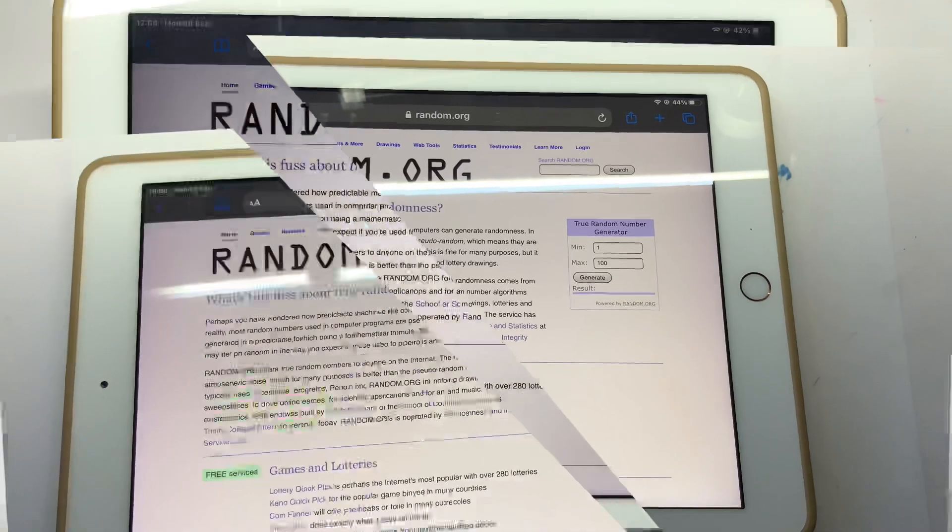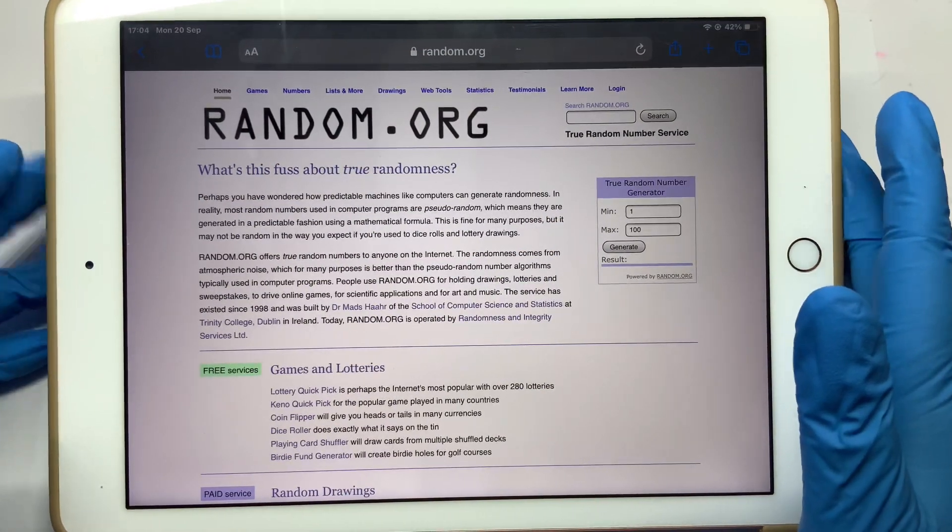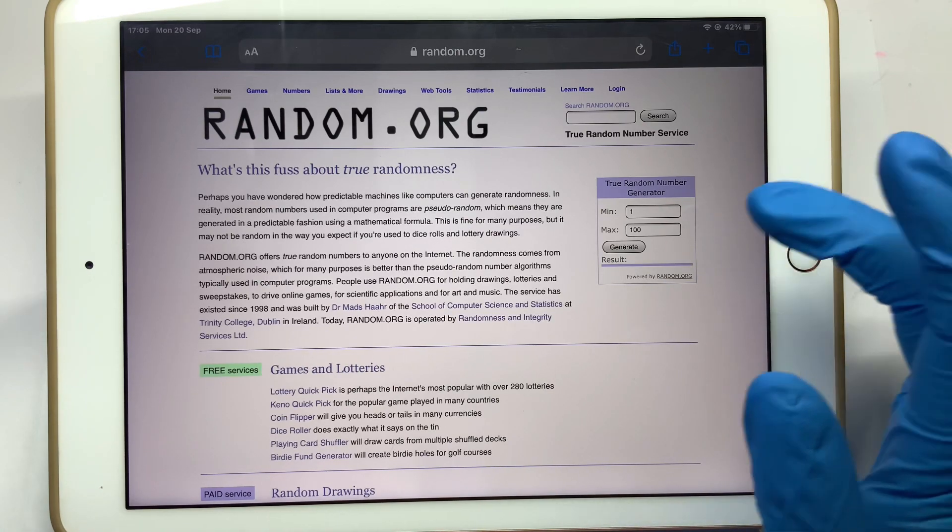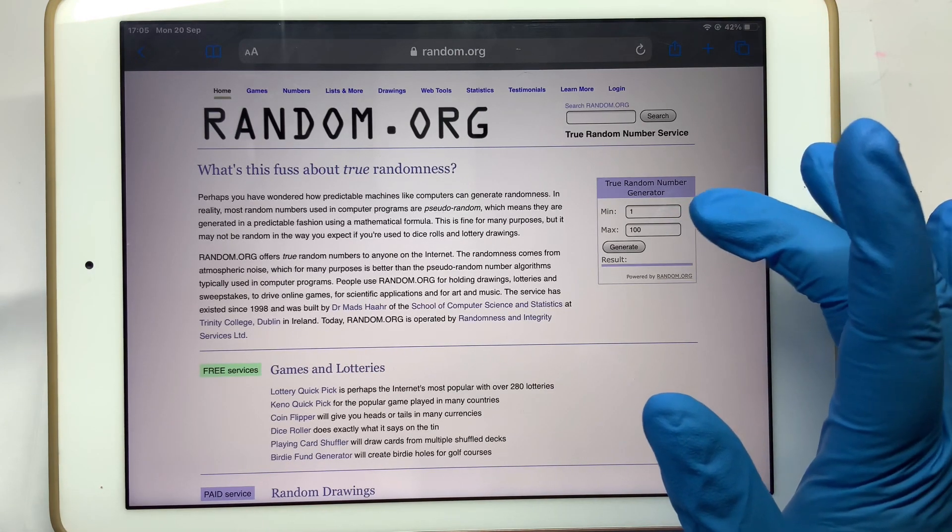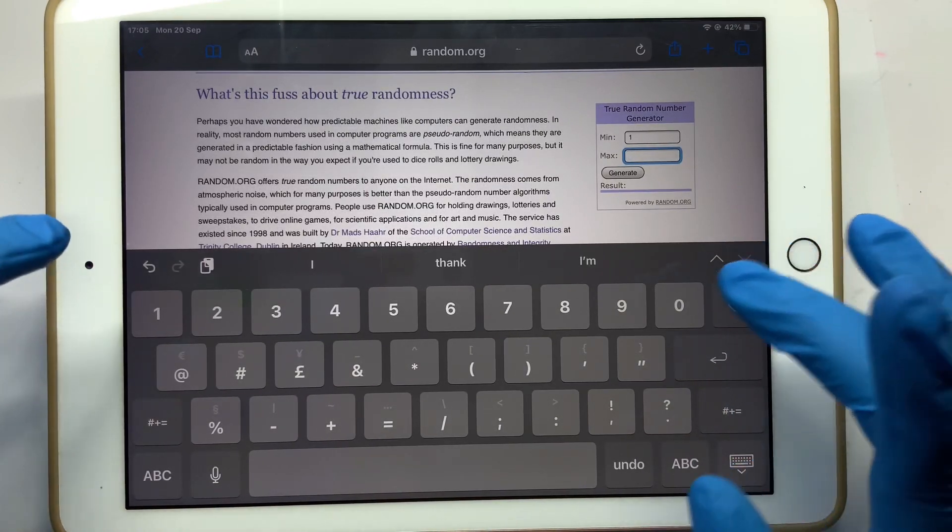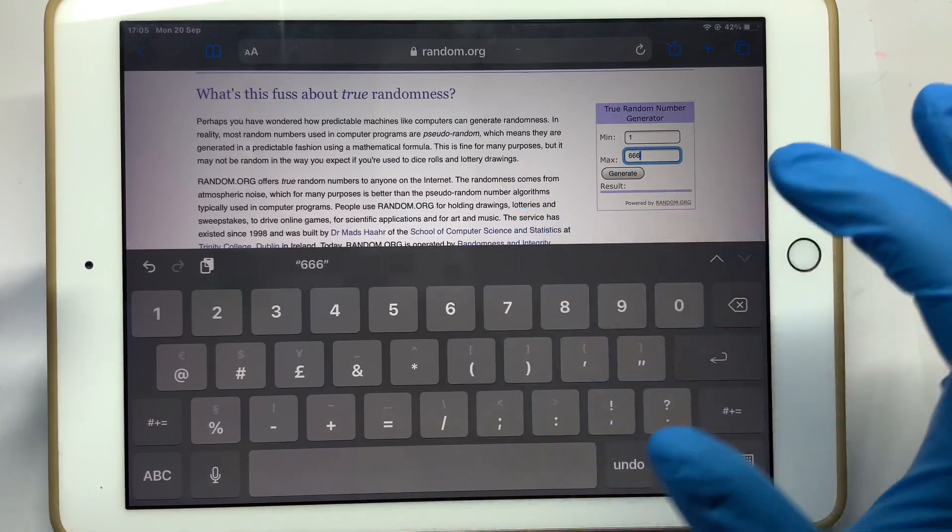We're going to do the international first. This lot is for the Charlie's Nail Art vouchers - there's a ten pound, a fifteen pound, and a twenty pound. I am going to do the ten pound first. Our highest number is 666.